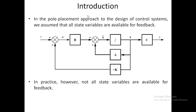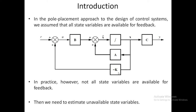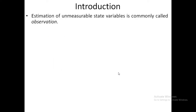In practice, however, not all state variables are available for feedback. The state variable x with gain constant K may not be available in practice — there are certain state variables which are not available for giving feedback to the reference input. In the pole placement approach, we need to estimate the unavailable state variables to achieve a specified output.